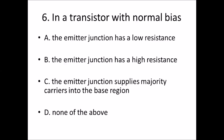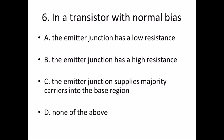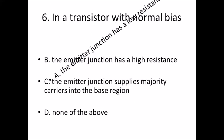Sixth bit: In a transistor with normal bias. Option A, the emitter junction has a low resistance. Option B, the emitter junction has a high resistance. Option C, the emitter junction supplies majority carriers into the base region. Option D, none of the above. Answer is Option A, the emitter junction has a low resistance.